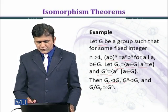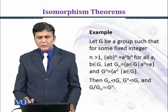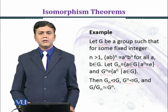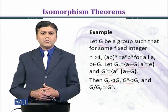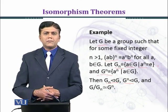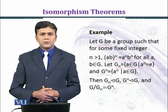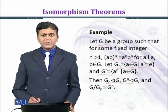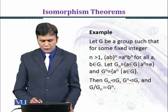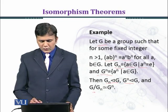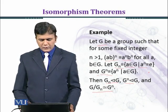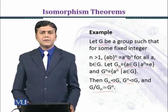Then G_n is a normal subgroup of G and G^n is also a normal subgroup of G. In the previous module we proved these two conditions, and now in this module we shall prove that G over G_n is isomorphic to G^n.